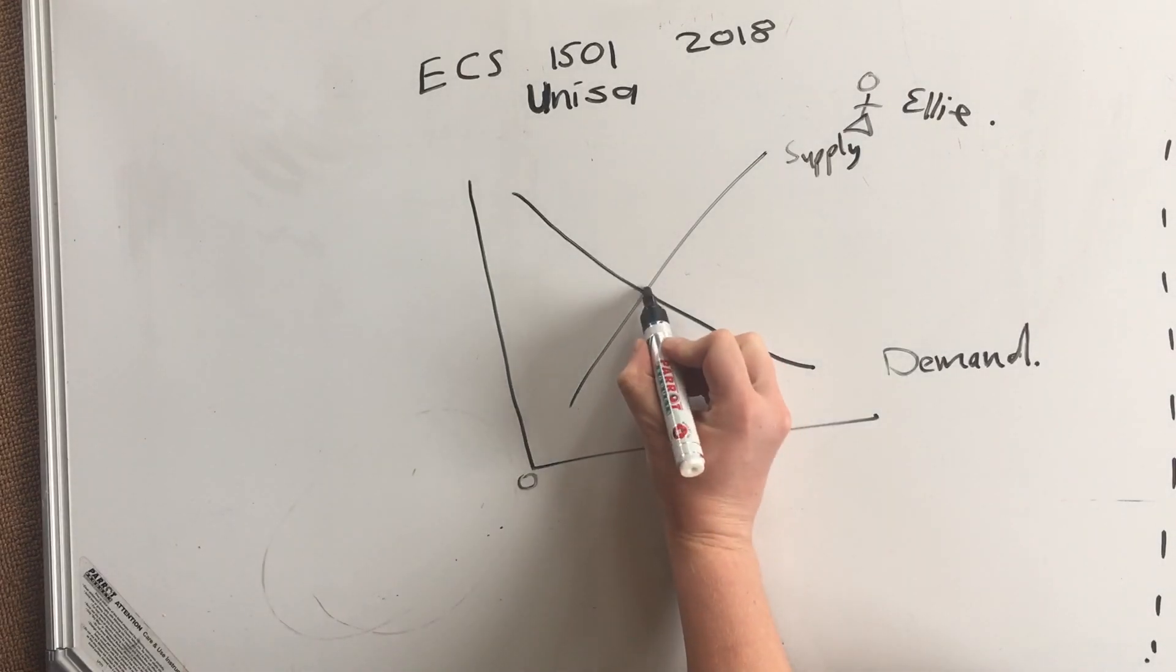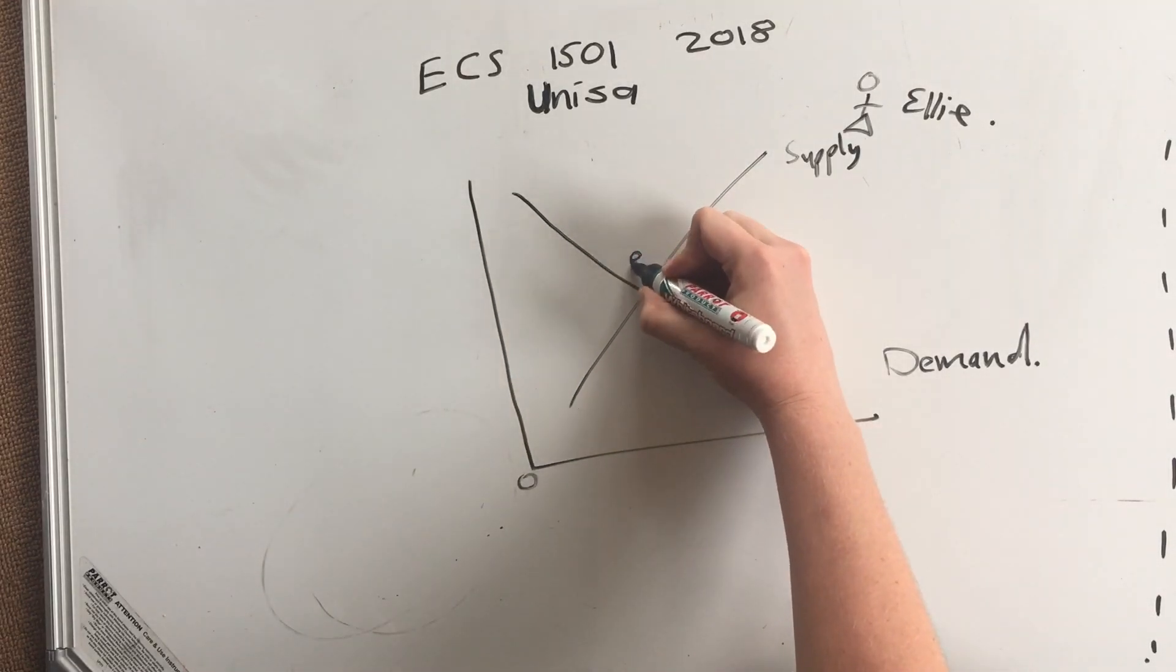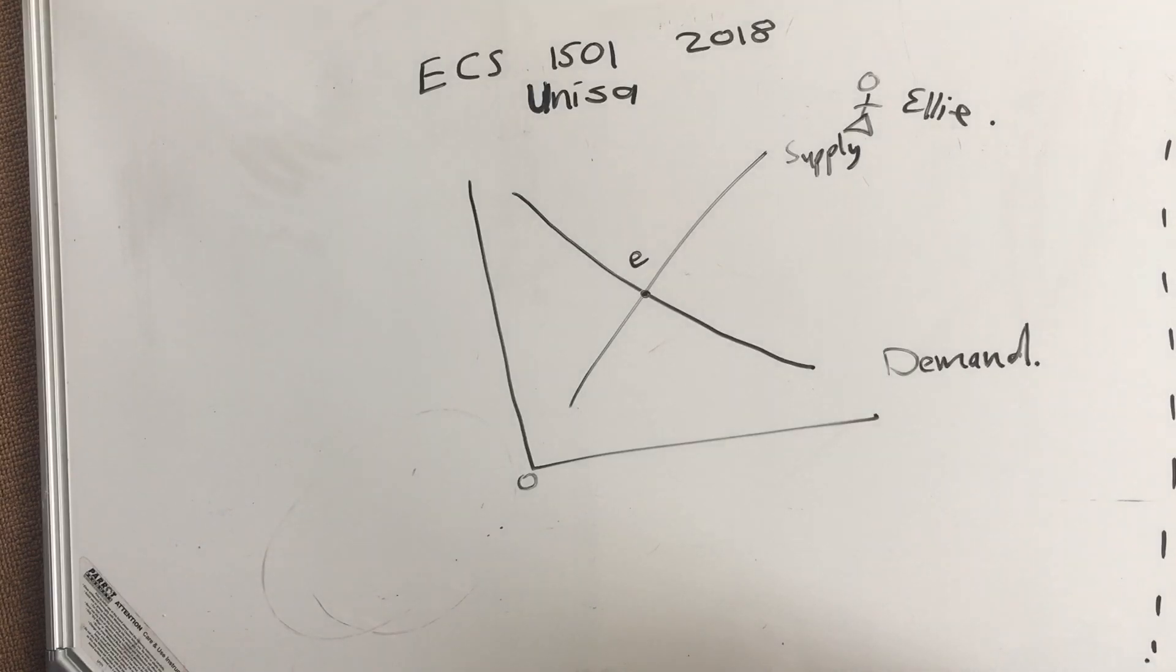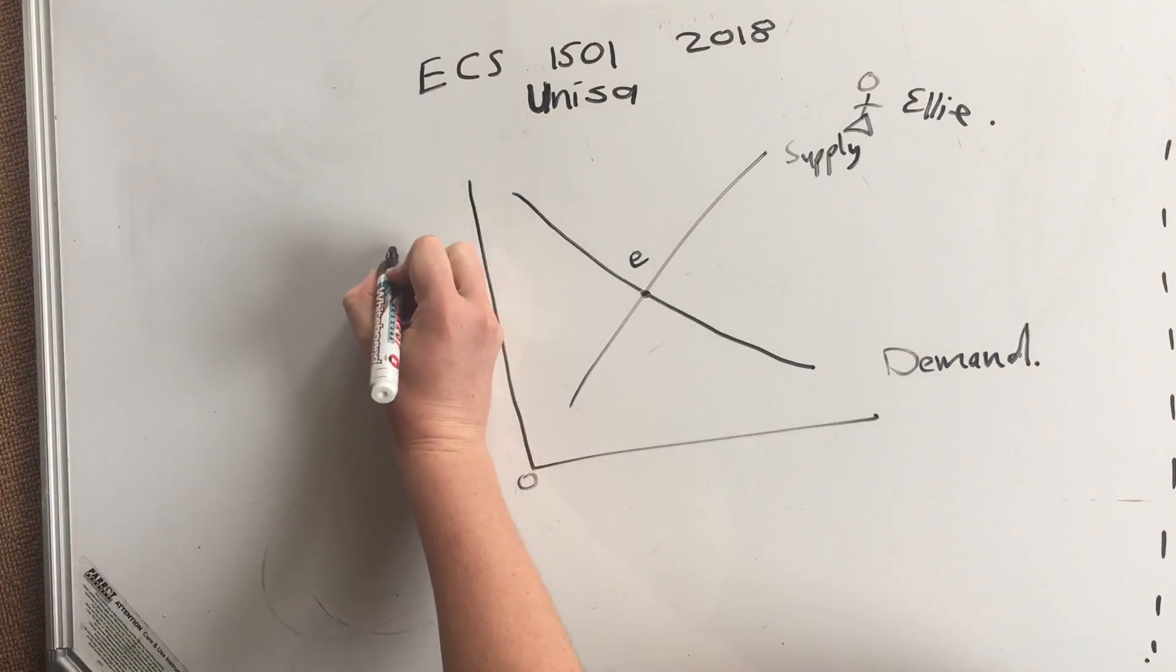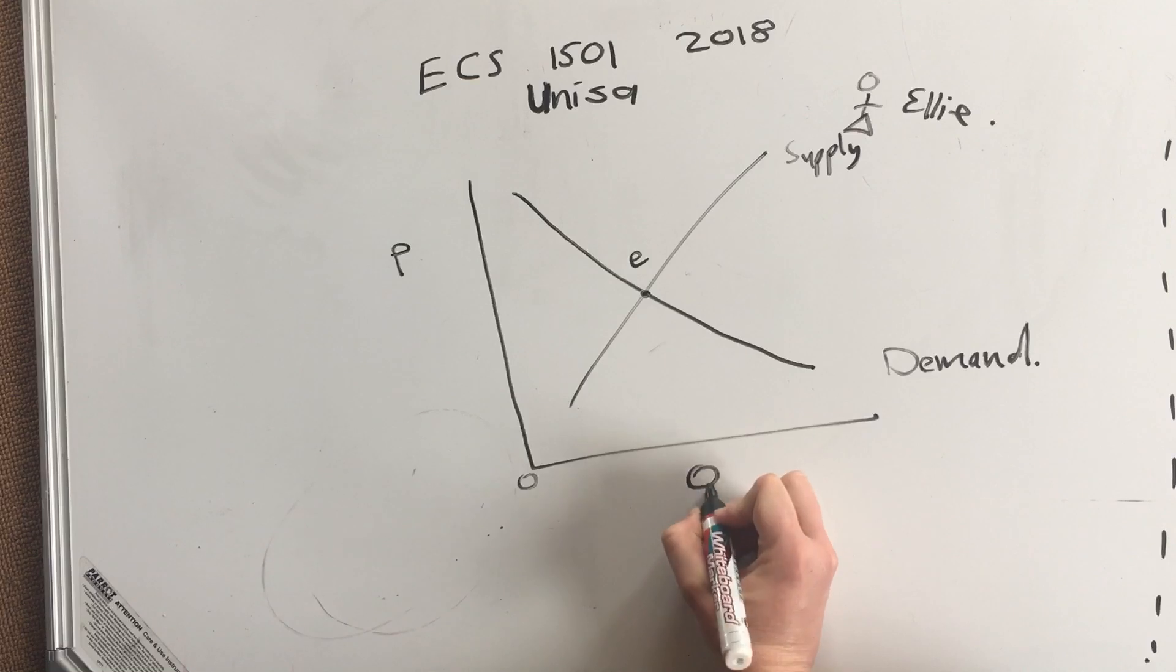Where the two meet is the equilibrium. What this means is if you're selling something, there's a price to it and there's a quantity demanded.